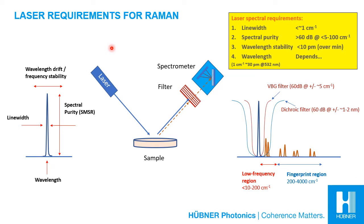What are the basic laser requirements for a spontaneous Raman spectroscopy experiment? Here is a schematic picture of a simple Raman spectroscopy setup. A narrow linewidth laser source illuminates a sample. Most of the light is Rayleigh scattered, but a small fraction will interact with phonons in the sample material, lose some energy, and get frequency shifted. By blocking the Rayleigh scattered light with a filter and studying the frequency-shifted light in the spectrometer, it is possible to determine the chemical composition of the sample.